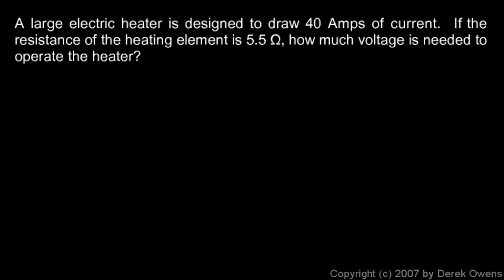All right, let's look at the problem. If the resistance of the heating element is 5.5 ohms, so that's the resistance, 5.5 ohms. And we're also given here the 40 amps, that's the current. So I'll write I for current is 40 amps. And we're asked how much voltage, the voltage is what we're looking for.